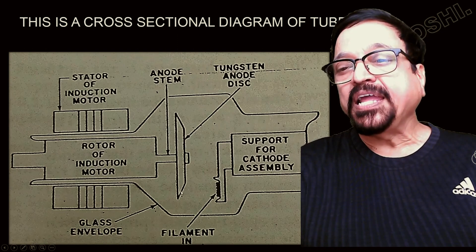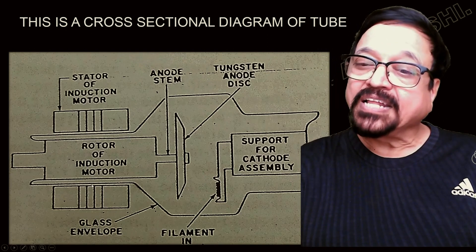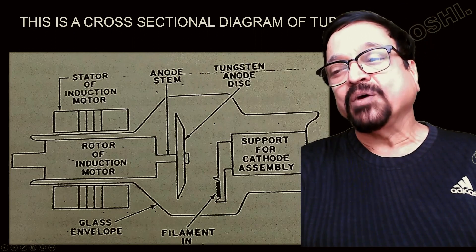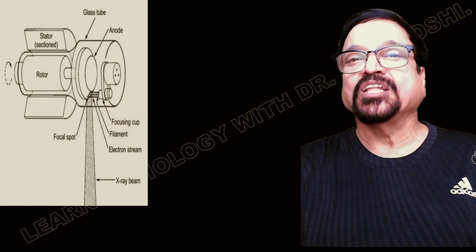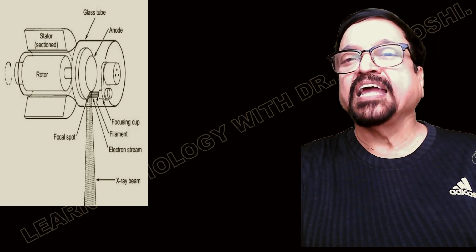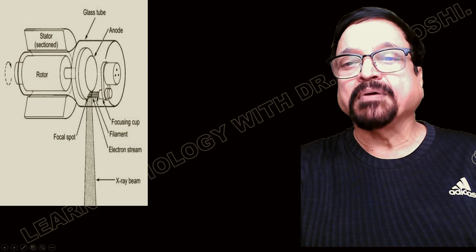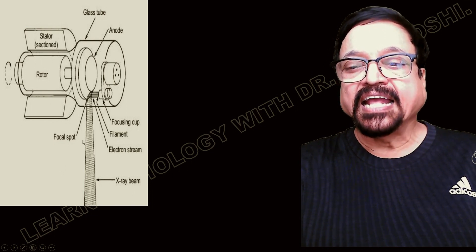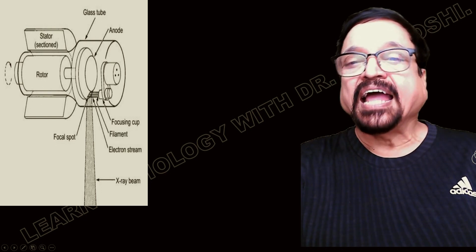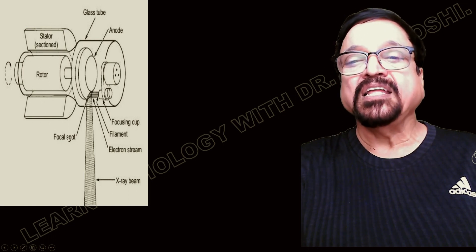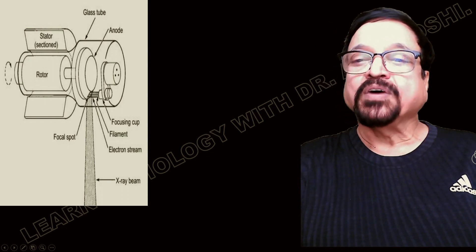Each surface gets exposed for only 1/60th of a second — a fraction of a second. All these components are embedded inside a glass envelope. We can see the stator, rotor, glass envelope, and anode. The X-ray beam comes out only from a short aperture, and the area of the anode where electrons are bombarded is called the focal spot. The tungsten target is in the form of a beveled disc, and this beveled shape means different areas are exposed as it rotates, widening the focal spot by an amount corresponding to the circumference of the disc.